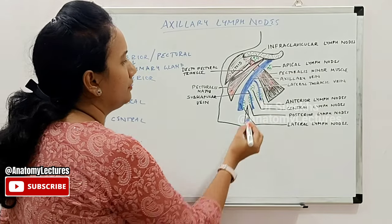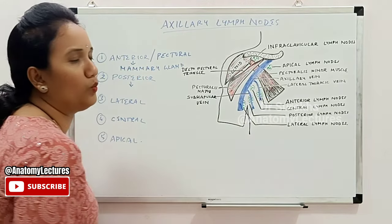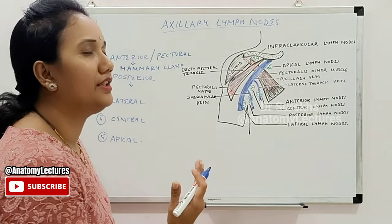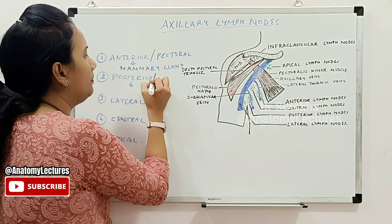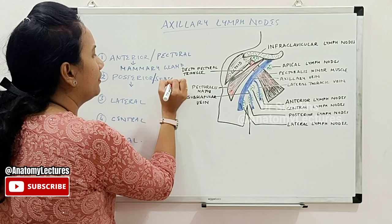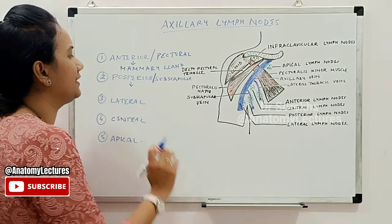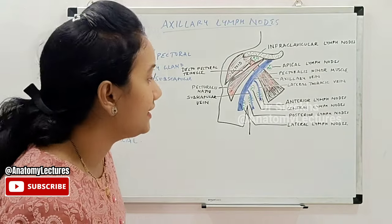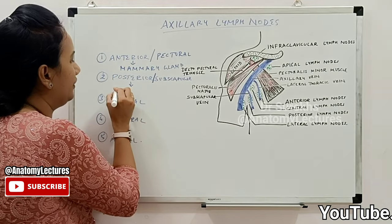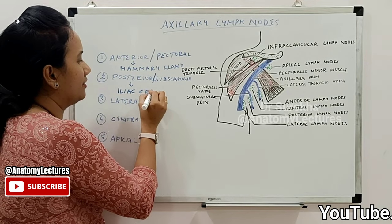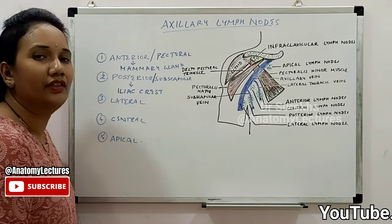The posterior group, also called the subscapular group, is present along the subscapular vein on the posterior wall of the axilla on the subscapularis muscle. It receives afferents from the posterior part of the body wall up to the level of the iliac crest.